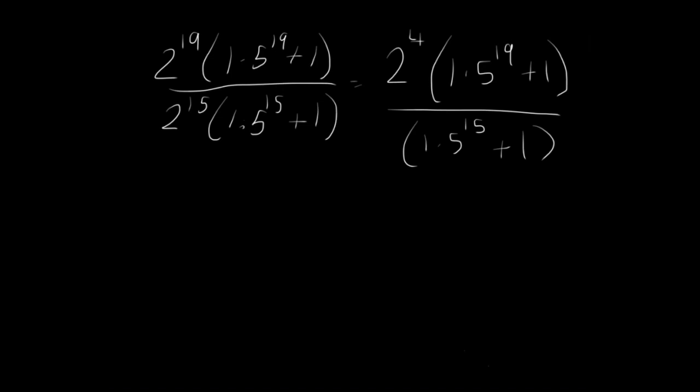And so here's the strategy to doing that. Because 1.5 to the 19th and 1.5 to the 15th are so large, we can effectively just cancel out the 1. Not cancel out, but just forget about it for now, I should say.